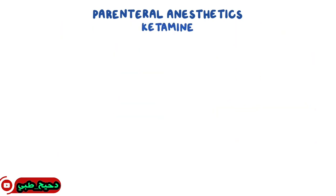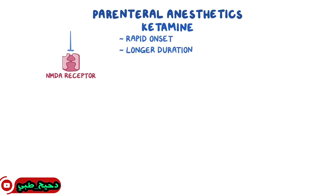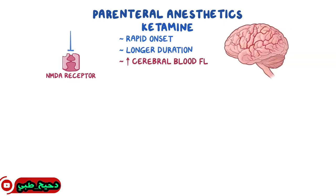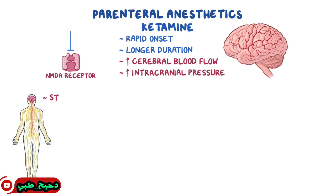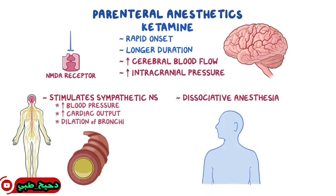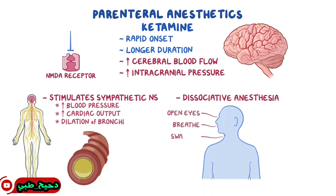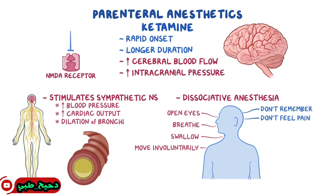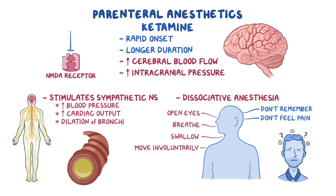Ketamine is quite different from other parenteral anesthetics. Its main mechanism of action is blocking NMDA receptors. It has a rapid onset but a longer duration than other parenteral anesthetics. Ketamine increases cerebral blood flow and increases intracranial pressure. It stimulates the sympathetic nervous system, which results in increased blood pressure and cardiac output, as well as dilation of the bronchi. So ketamine is suitable for patients at risk of hypotension and for asthmatics. Ketamine causes a state called dissociative anesthesia, where the patient is not completely unconscious — they can breathe, open their eyes, swallow, and move involuntarily, but they don't remember the procedure or feel pain. A disadvantage is that when the patient wakes up, they can have hallucinations or delusions for a short while.